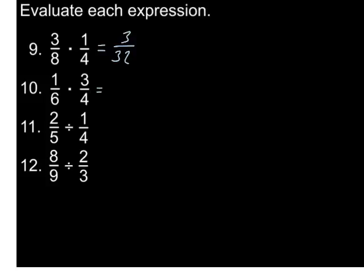Alright, we're going to repeat the process here with number 10. Multiply across the top, we get 3. Multiply across the bottom, we get 24. So we have 3/24. Does that reduce? Yes, because I can divide both top and bottom by 3, which gives me 1/8.